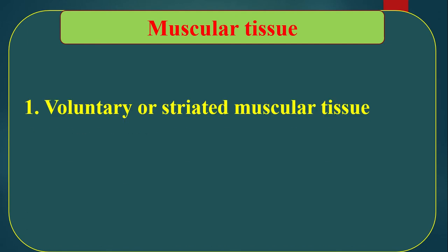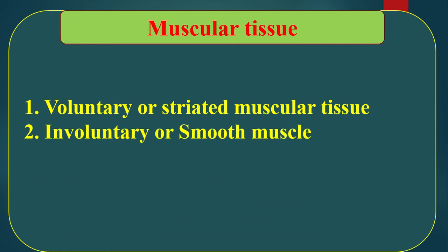Muscular tissue may be divided into three types. Number one: voluntary or striated muscular tissue. Number two: involuntary or smooth muscle. Number three: cardiac muscle.